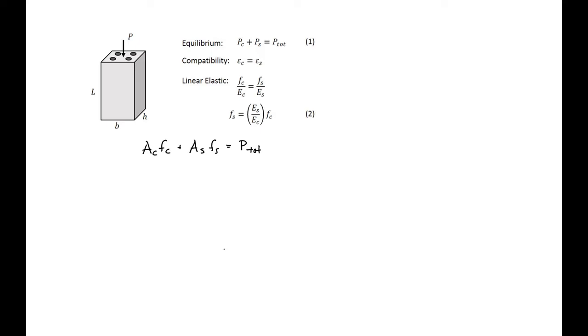Next we'll substitute our expression two into our expression here. So we'll have AC times FC plus AS times FC times ES over EC equal to our total load.